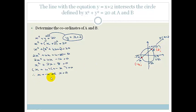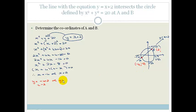Now we need to find the y values. To get y, we substitute back into the straight line rather than the circle. So y = −4 + 2 = −2, so that point A is (−4, −2). Or y = 2 + 2 = 4, so point B is (2, 4).